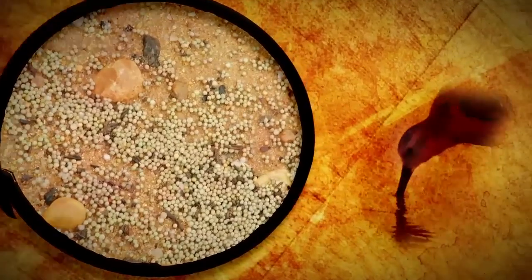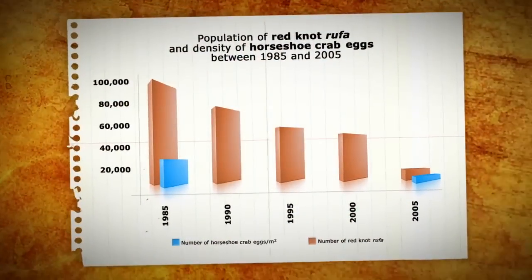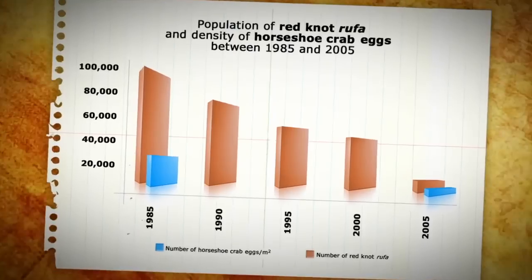Unlike mollusks, these eggs have no shell and allow the bird to feed even with an atrophied gizzard. However, overfishing of horseshoe crabs in the 90s has decreased the available egg supply.